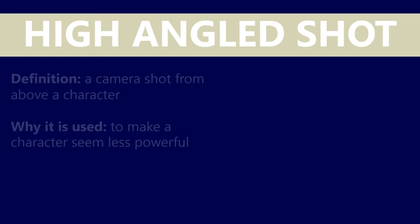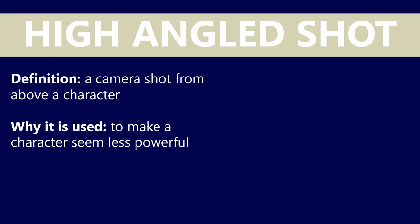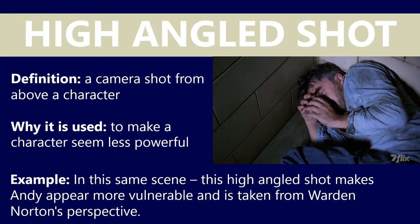The opposite of a low-angle shot is a high-angle shot — this is a camera shot from above a character, which is used to make a character seem less powerful rather than more powerful. Using the same scene with Warden Norton, there are high-angled shots taken of Andy Dufresne, making him appear much more vulnerable, shot from Warden Norton's perspective. This particular scene is really important because it highlights the power differential between Andy and Warden Norton. There's a clear imbalance between the two of them, and we definitely feel sympathetic for Andy in this exchange.